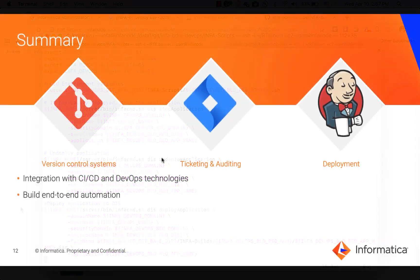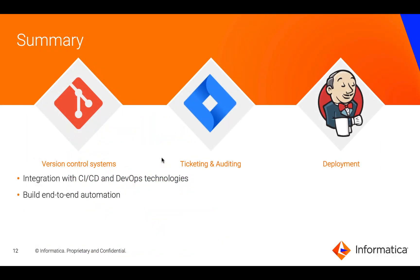In summary, Big Data Management can be integrated with CI, CD, and DevOps technologies to build an end-to-end automation flow. You can integrate Big Data Management with version control systems such as Git, ticketing and auditing systems such as Jira, and deployment and orchestration systems such as Jenkins. Thank you for watching this video.